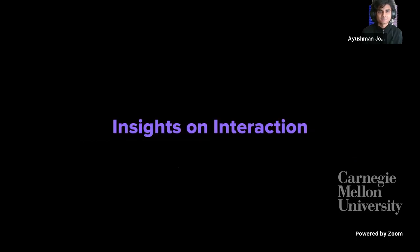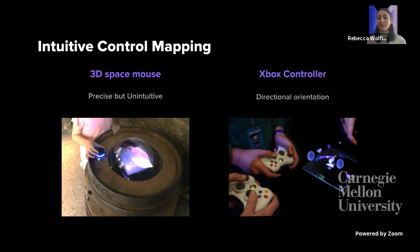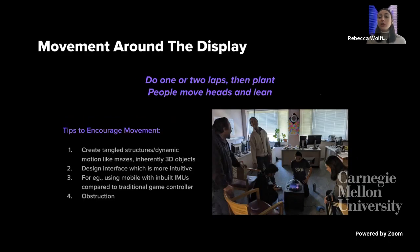Beck discusses insights on interaction. The team wanted to explore how people would interact with the display given its inherent 360-degree nature. They found that layering tech can be cool but adding too much adds unnecessary complexity. The first learning is that intuitive control mapping is essential — the included 3D space mouse was very precise but incredibly unintuitive, causing naive guests to become increasingly frustrated. The Xbox controller was intuitive but had a directional orientation problem when moving around the machine. They fixed this by using the inherent compass in a mobile phone as a controller so that the user's forward always matches the avatar's forward.